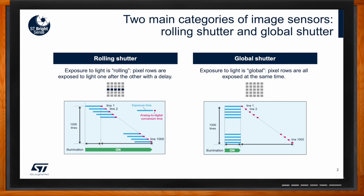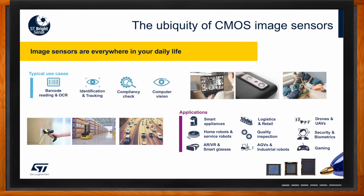So Therese, what are the key markets for global shutters and what applications can we find them in? Global shutters are becoming more and more important in many industries because they capture clear images very quickly. In barcode reading, global shutters help scan barcodes on moving items without any issue, which is essential for managing inventory, warehouses, and logistics applications like conveyor belts. Global shutters are also used in computer vision, helping robots like home assistants or drones understand and react to their environments.